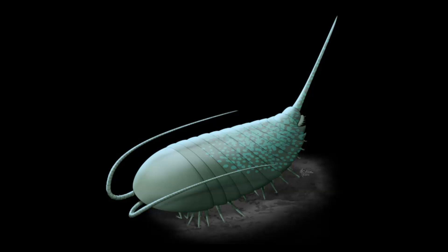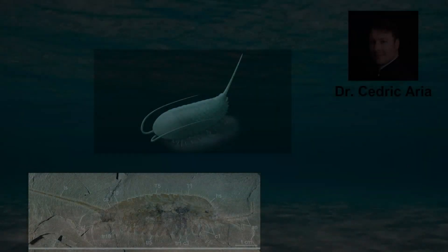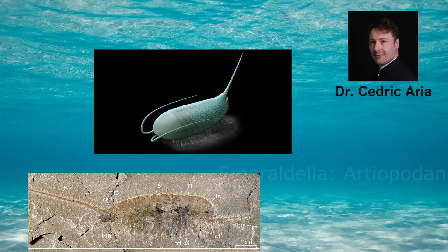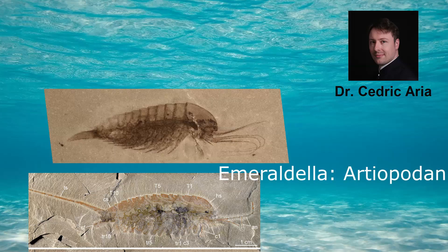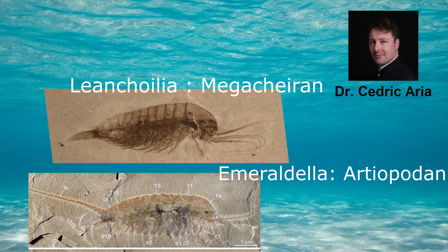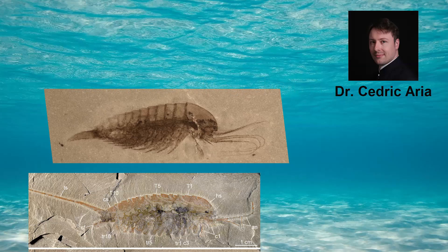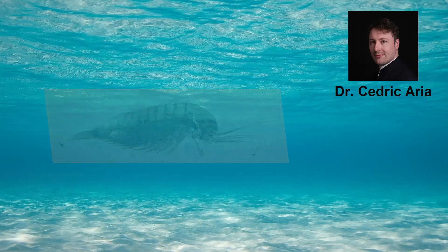There is a member of the trilobitomorphs called Emeraldella that is worth mentioning. What's actually striking with the specimen published from Utah — because it's a lateral view — is the overall similarity between Emeraldella in lateral view and a megacheiran. You have antennae, but the way the antennae are attached in the head and the disposition of the limbs is very reminiscent of megacheirans. This characterizes the main clade that includes both trilobite-like animals and the chelicerates, called the arachnomorpha.